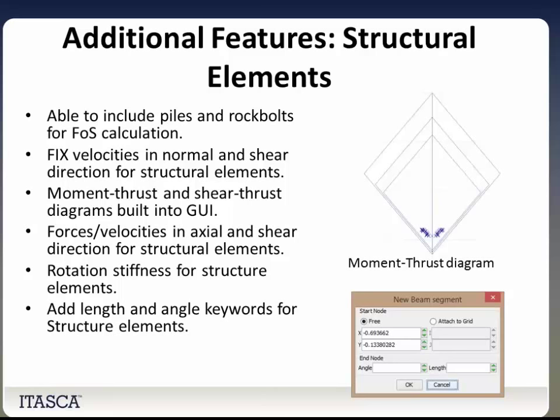Here are some new features for structural elements. We can now include piles and rock bolts in factor of safety calculations. You can fix the velocity in the normal and shear direction for structural elements. Moment-thrust and shear-thrust diagrams are now built into the GUI. Force and velocity in the axial and shear direction are built into structural elements. You can now define the rotational stiffness for structural elements, and we've also added the ability to specify the length and angle for structural elements — entering the start node and then the angle and length for the end node.